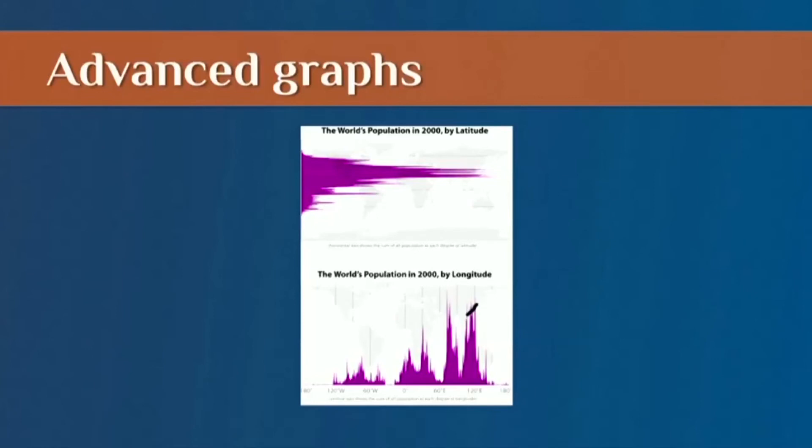Well, this peak is probably China. This peak reflects the population in India, right? So where you have a normal distribution of population around latitude centered around the equator, the same can't be said for longitude. The distribution is not normal. The population distribution is not normal across longitude.